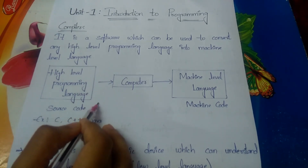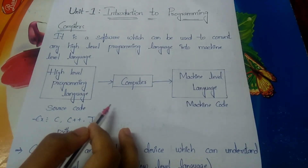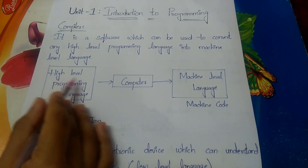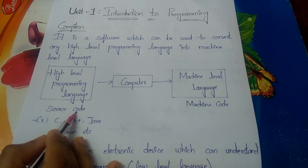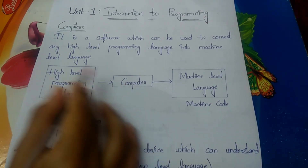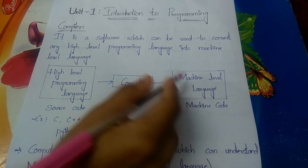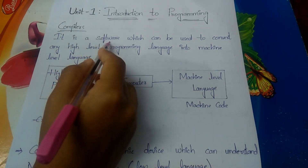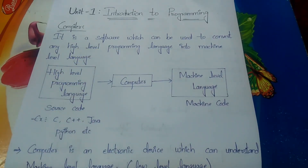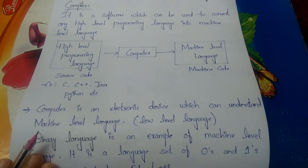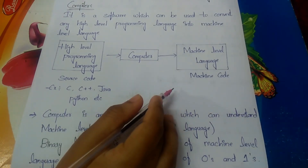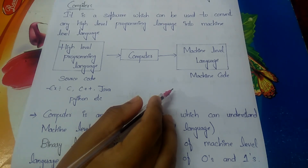Examples of high-level programming languages include C, C++, Java, Python, and so on. This is also called source code. The machine code, which is understood by the computer, is the machine-level language, also called low-level language. The compiler converts high-level programming language into this machine-level language.